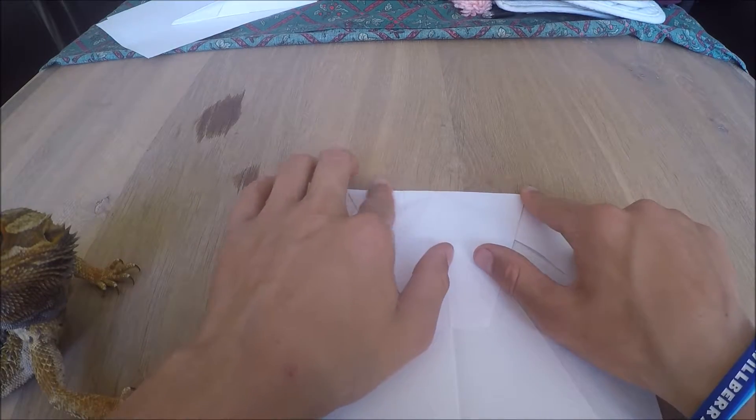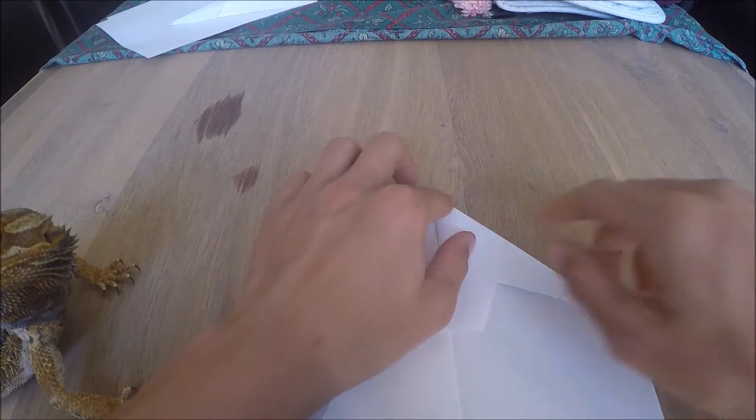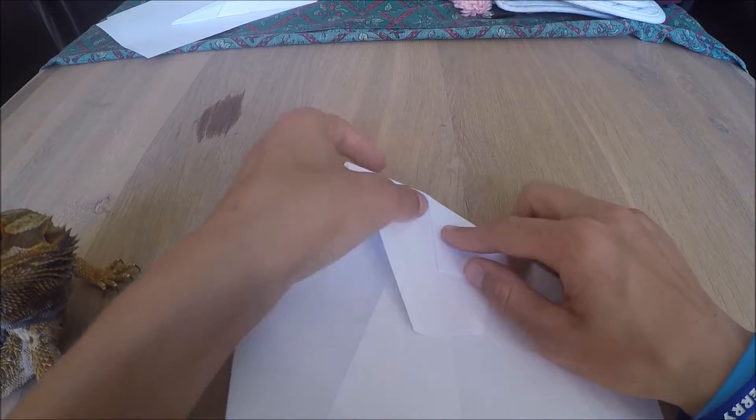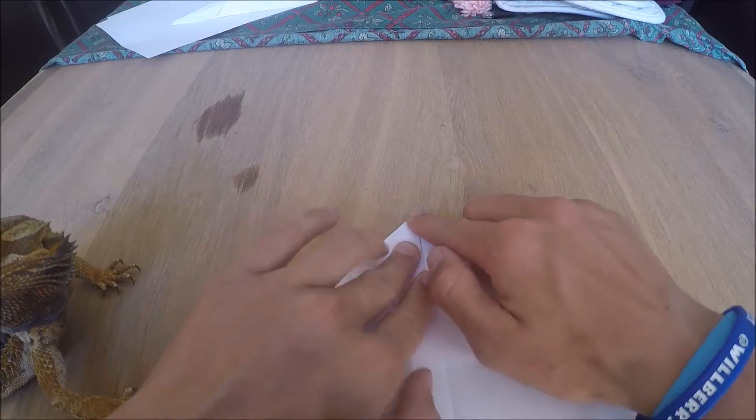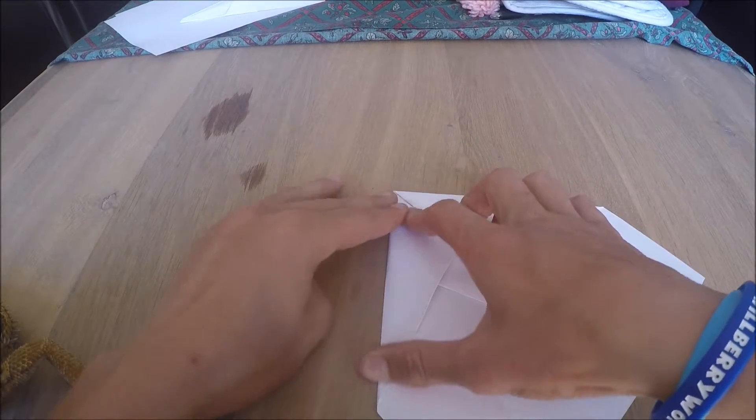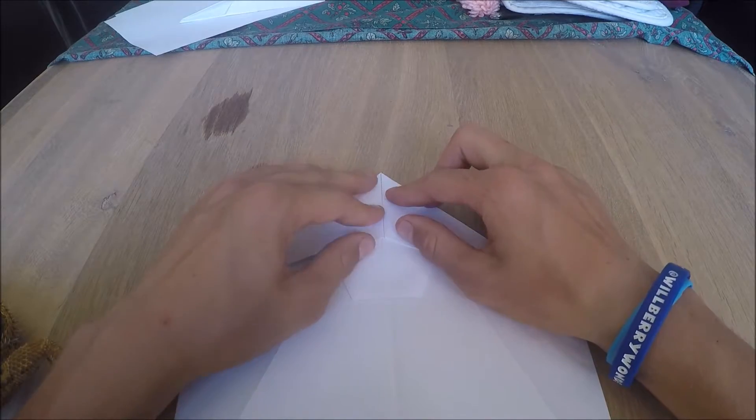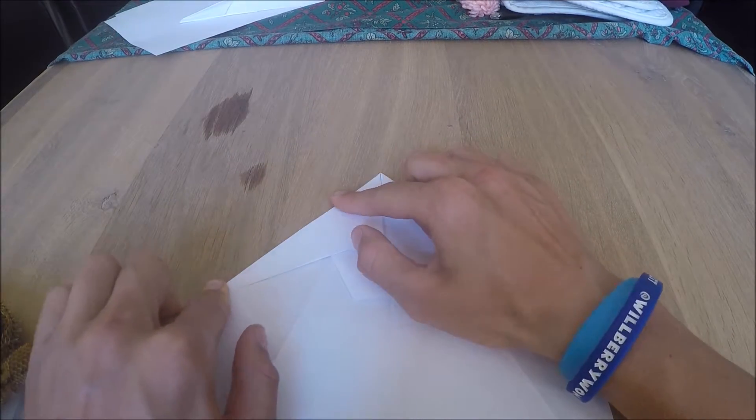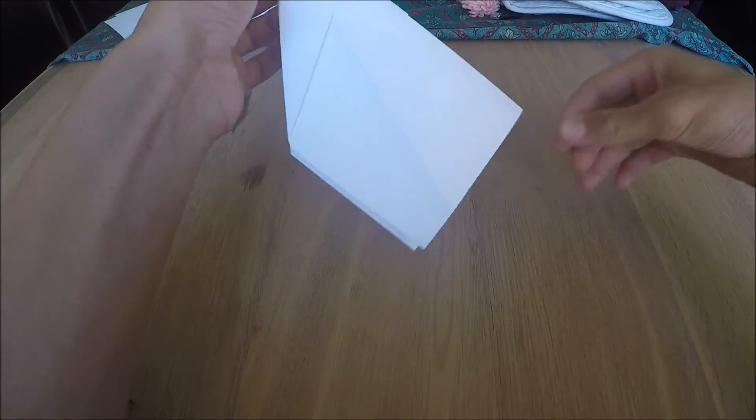Once you've done this, fold these two flaps over here and make a nice crease. Then push them out to the outside corner. After you've done that, push it down and make sure the crease is good. Then you can fold it over to get the basic base of the plane.